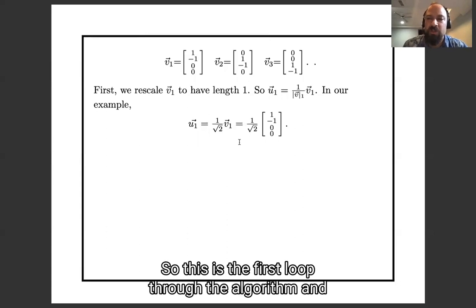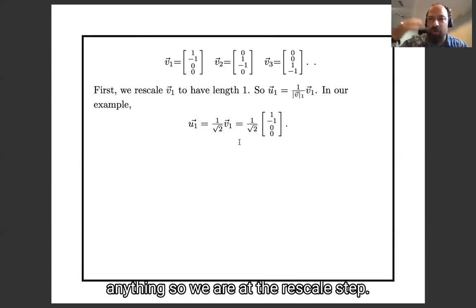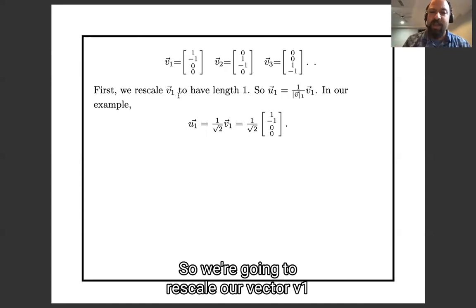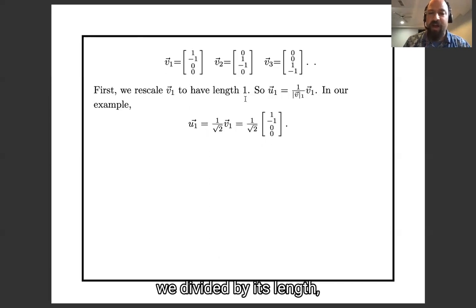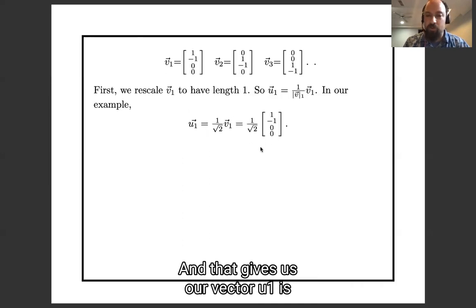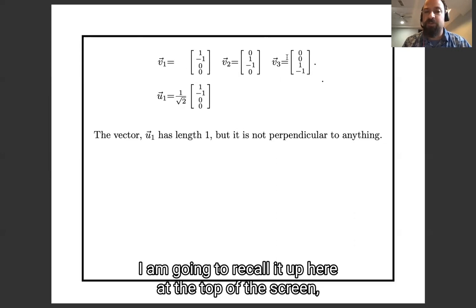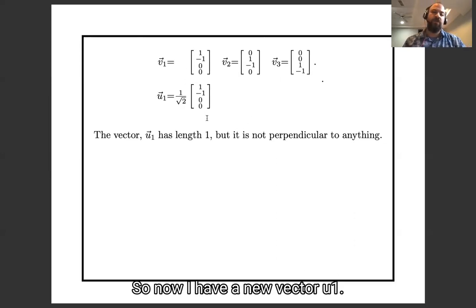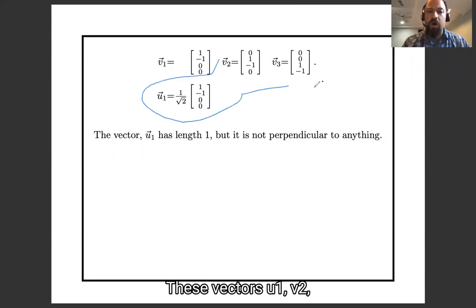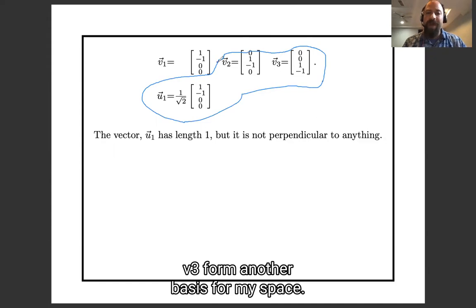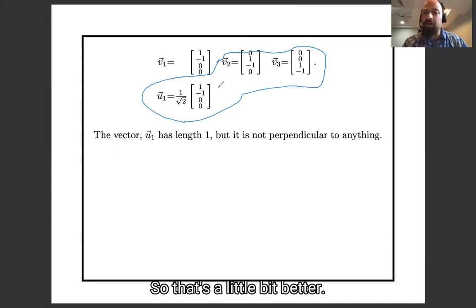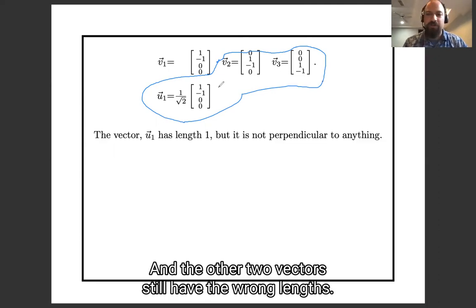The first thing we're going to do, so this is the first loop through the algorithm, and on the first step projection doesn't do anything, so we're at the rescale step. So we are going to rescale our vector v1 to make it length one. We divide it by its length, so it will become length one. In our example, we take v1 and we divide by the square root of 2, which is the length of v1, and that gives us our vector u1 is 1 over square root of 2 times the original vector v1. I'm going to record up here at the top of the screen the things we have computed so far. So now I have a new vector u1. These vectors u1, v2, v3 form another basis for my space, and the first vector in this basis is length one, so that's a little bit better, but it's not perpendicular to anything, and the other two vectors still have the wrong lengths.